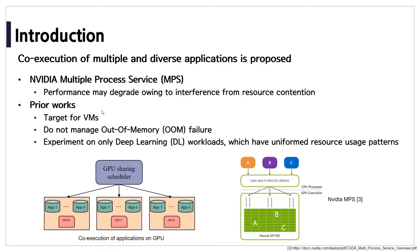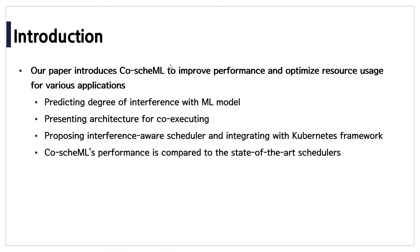Prior works have limitations as follows. First, some papers target VMs, so they cannot be applied to container environments. Second, since GPU cannot provide memory virtualization compared to CPU, memory management is necessary to avoid OOM failure. Furthermore, prior works experiment on only deep learning workloads, which have uniform resource usage patterns. For these reasons, our paper introduces CoScheduleML to improve performance and optimize resource usage for various applications.